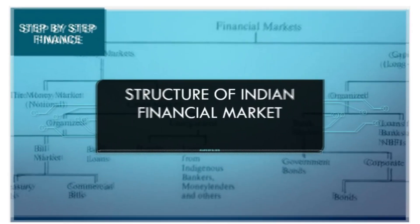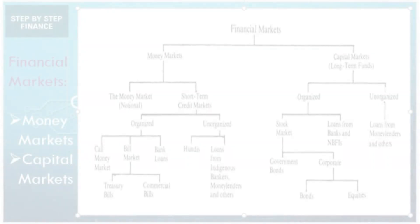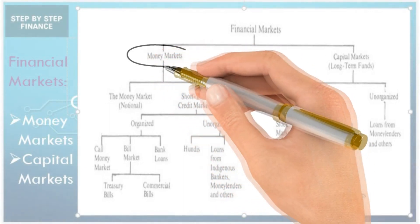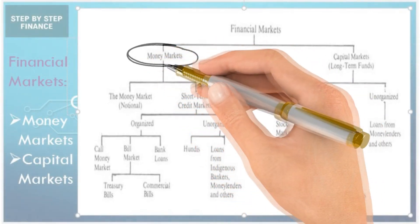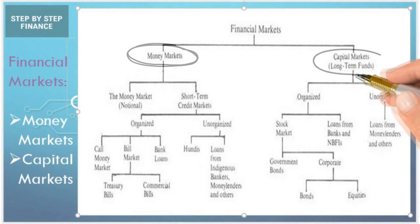Now let's understand the structure of the Indian financial market at a high level. Indian financial markets are of two types: money market and capital market.